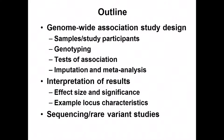Today we'll talk about genome-wide association study design, the identification of samples and study participants, the genotyping process and cleaning, tests of association between variants and a quantitative trait or risk of disease, and aspects useful for identifying variants using imputation and meta-analysis. We'll also cover interpretation of specific results, the use of both effect size and significance, look at example loci, and discuss where the field is moving as sequencing allows more variants to be identified at lower frequencies.